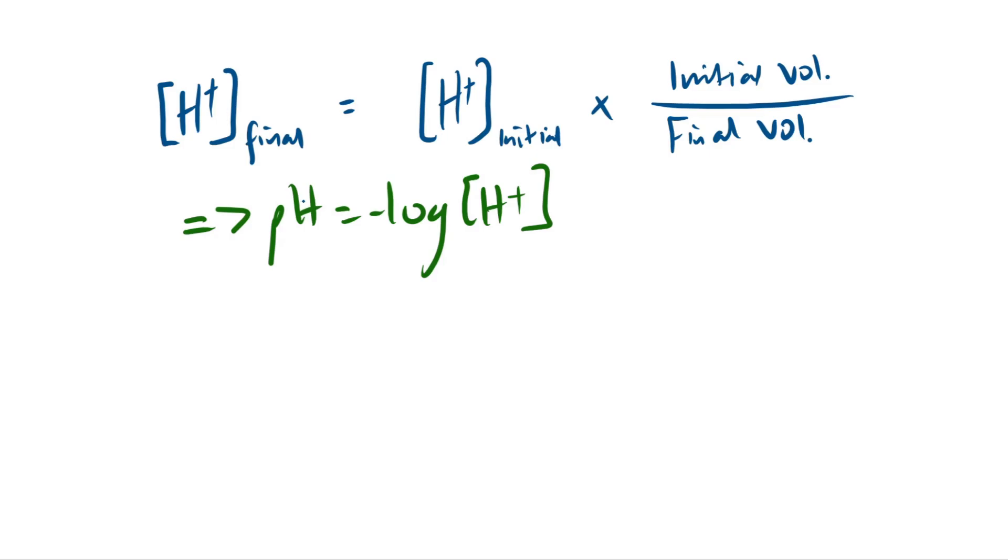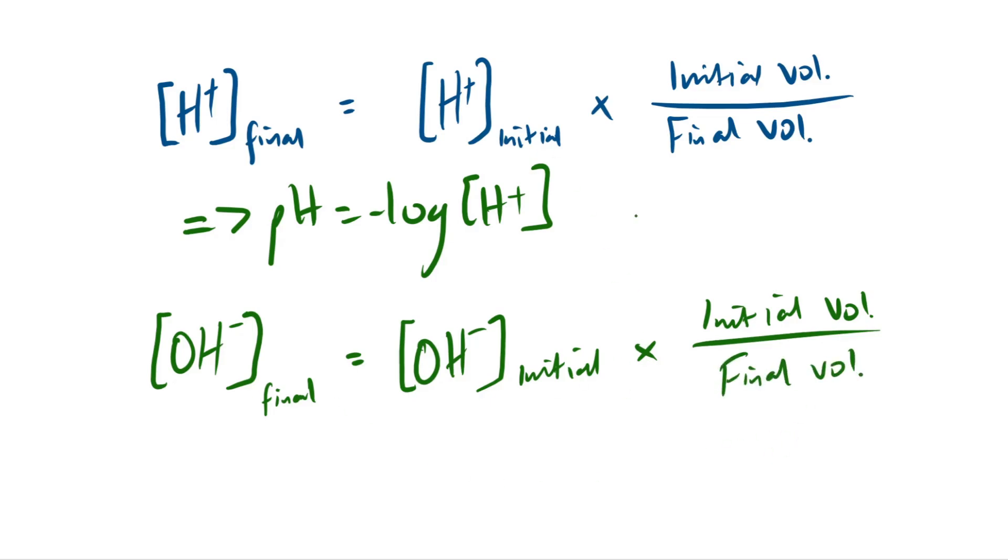So we can apply exactly the same thing to our hydroxide concentration for dilution of a base. So if you wanted to work out what our final OH minus concentration is, you would follow exactly the same steps. So you'd have your OH minus initial multiplied by initial volume over final volume. Simple as that. You can literally replace it just with OH minus instead of H plus.